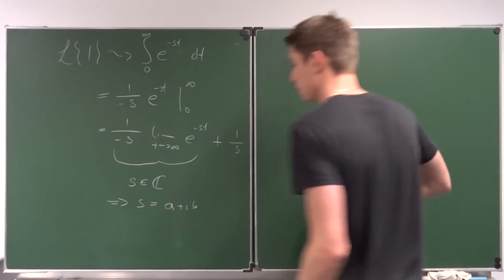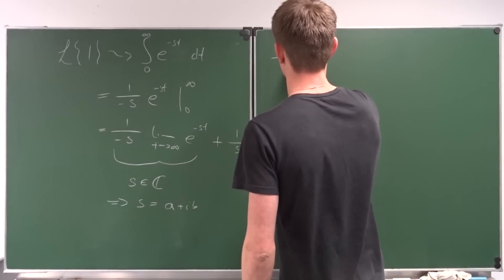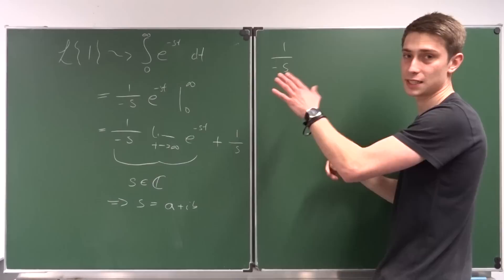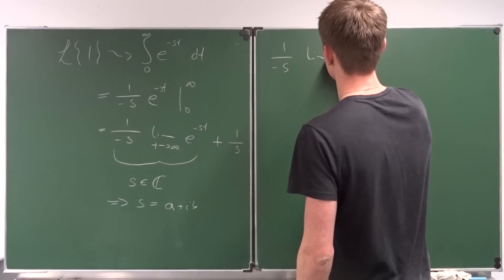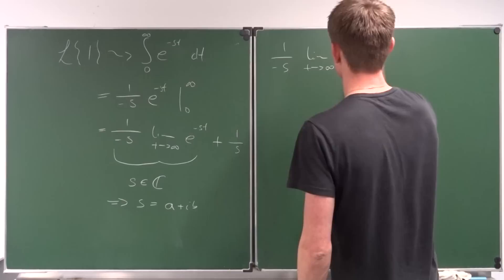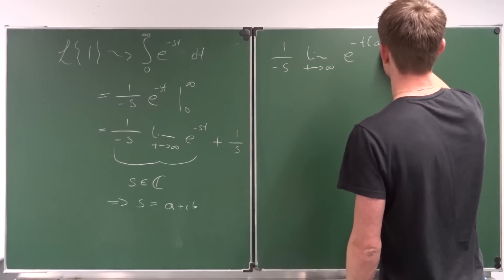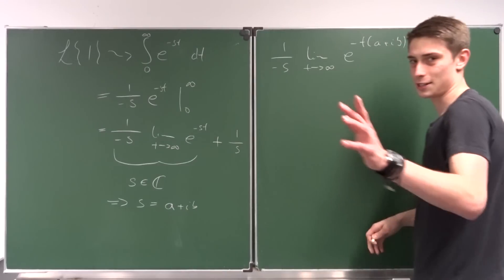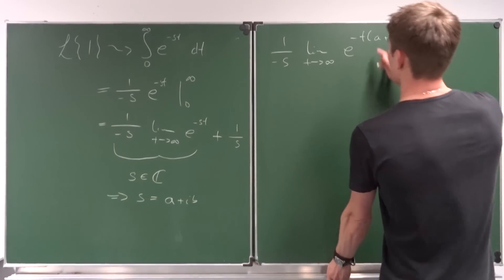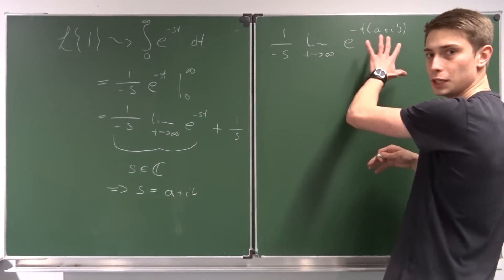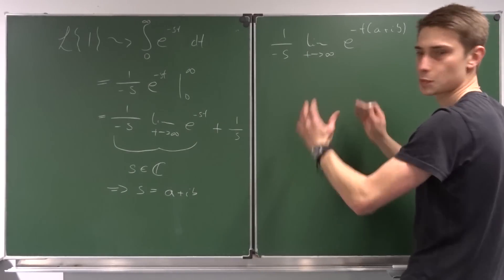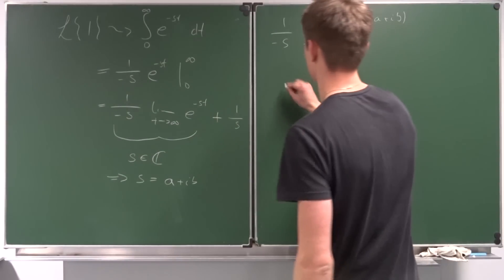Let's take a look at this limit. Now we end up with one over minus s times the limit as t approaches infinity of e to the minus, and now t times a plus ib. And here's the point: we can distribute this t into this complex number and then we can split this exponential function apart.